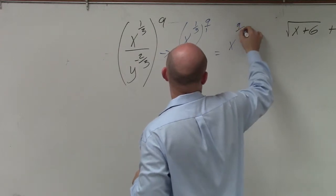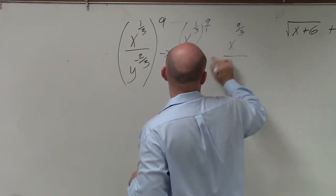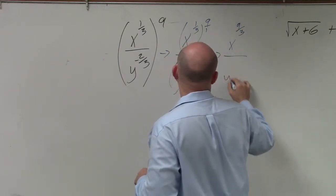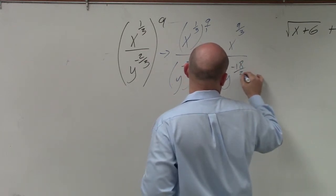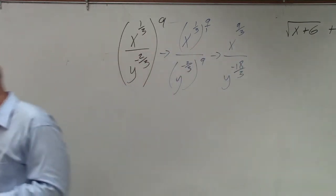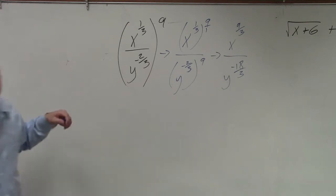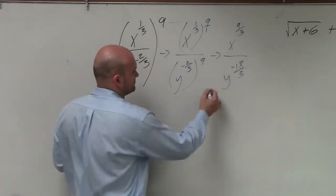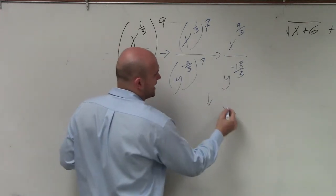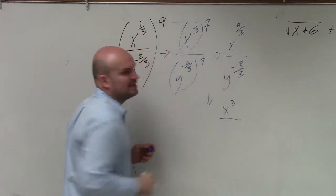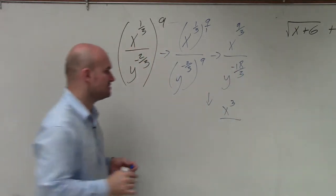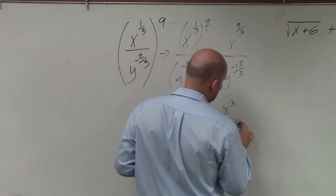So I have x to the 9/3 over y to the negative 18/3. Now I can simplify both of these. 9 divided by 3 is 3, so x to the 3rd. And negative 18 divided by 3 is y to the negative 6.